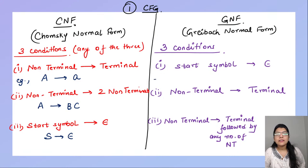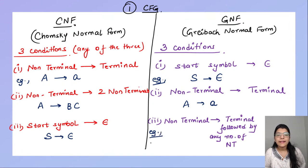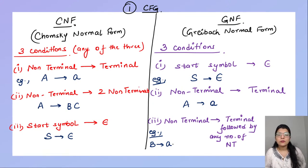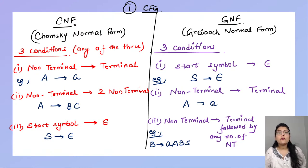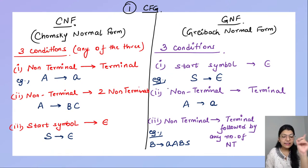For GNF example: S → ε (null); non-terminal generates a terminal (same as CNF second condition); and for the third condition, suppose B is a non-terminal — it produces a terminal like small 'a' followed by any number of non-terminals: it can be just 'a', or 'aB', or 'aBS'. Whenever I have to tell whether a given grammar is CNF or GNF, any of the three conditions should be satisfied by each and every production.